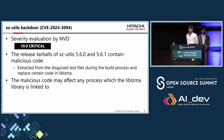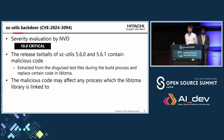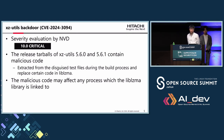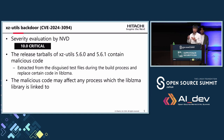The backdoor to this program is assigned the number CVE-2024-3094. The severity is evaluated as 10.0 — the highest score — meaning it is the most severe vulnerability. The release tarballs of XZ Utils versions 5.6.0 and 5.6.1 contain malicious code. That code is extracted from disguised test files during the build process, replaces certain code in liblzma, and works as a backdoor for programs that link liblzma.